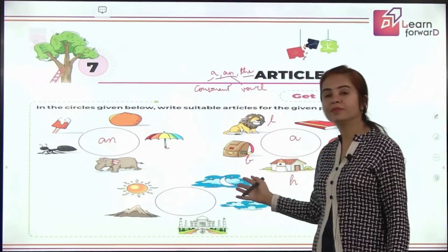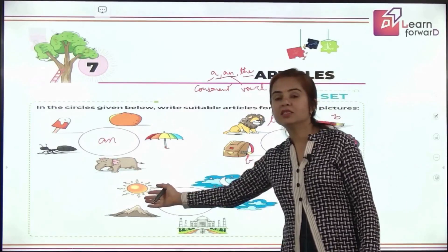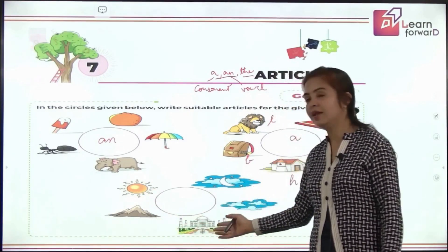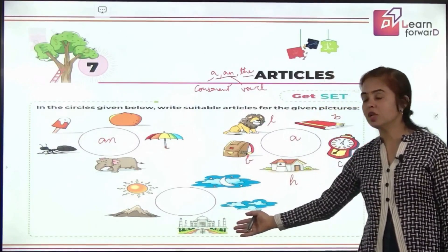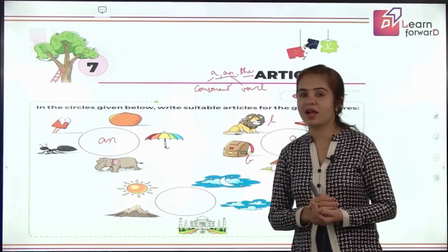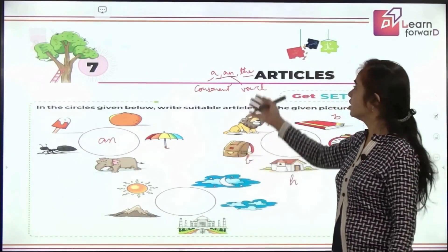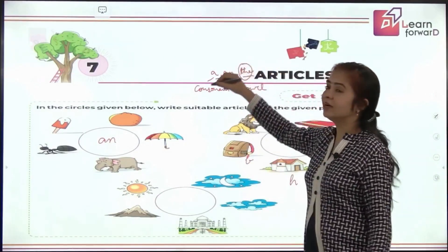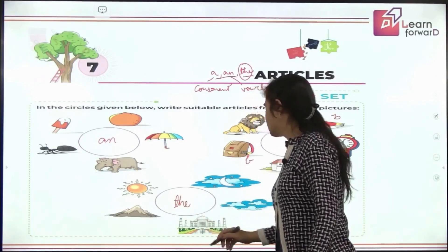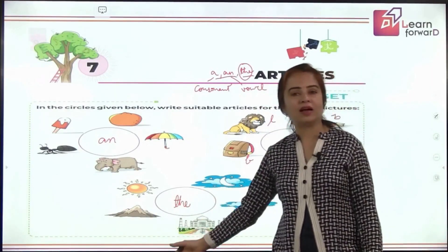Now look at these. These are moon and stars, this is the sun, these are some mountains, this is a monument — a special building — and this is clouds or the sky. For all these, just remember the use of the. We say the sun, the moon, the stars, the sky, the clouds, the Taj Mahal, and the Himalayas.